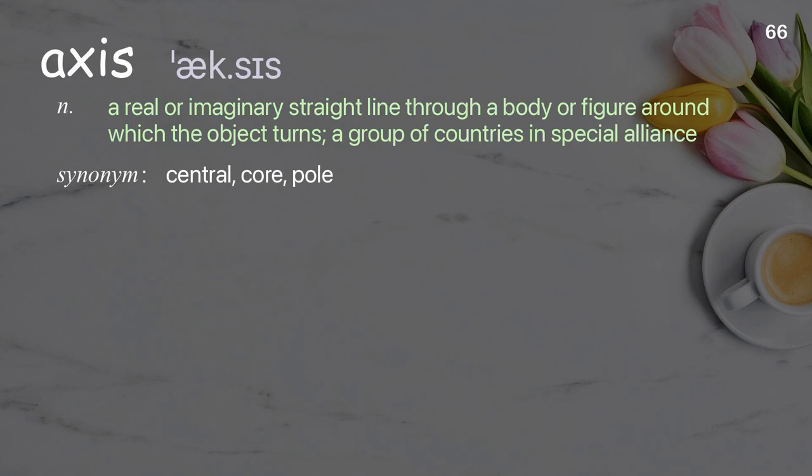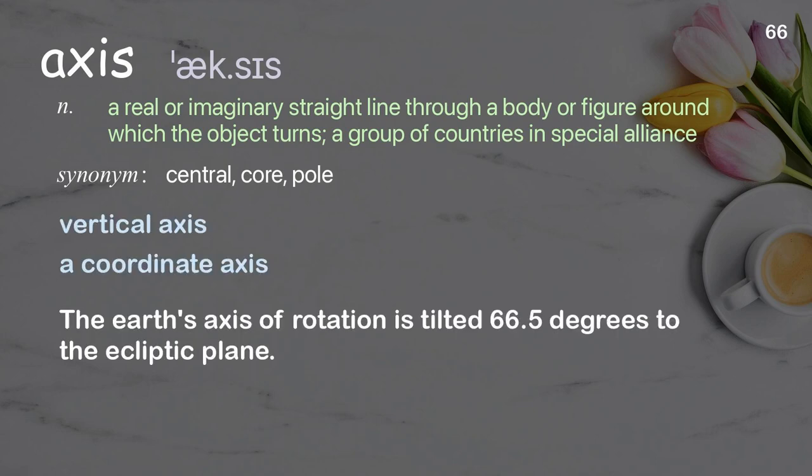Axis. A real or imaginary straight line through a body or figure around which the object turns; a group of countries in special alliance. Examples: vertical axis, a coordinate axis. The earth's axis of rotation is tilted 66.5 degrees to the ecliptic plane.